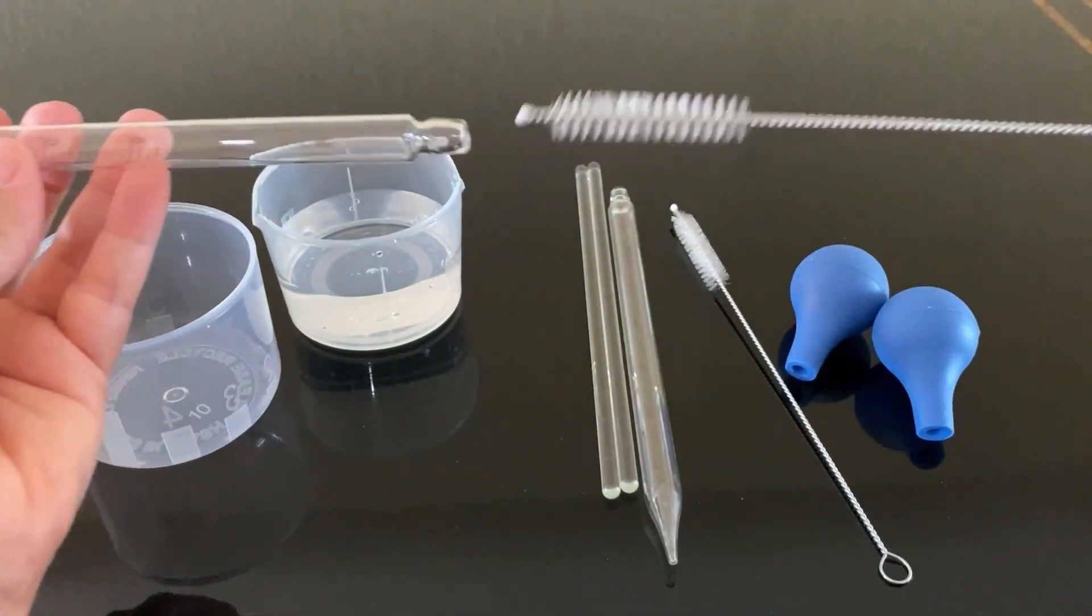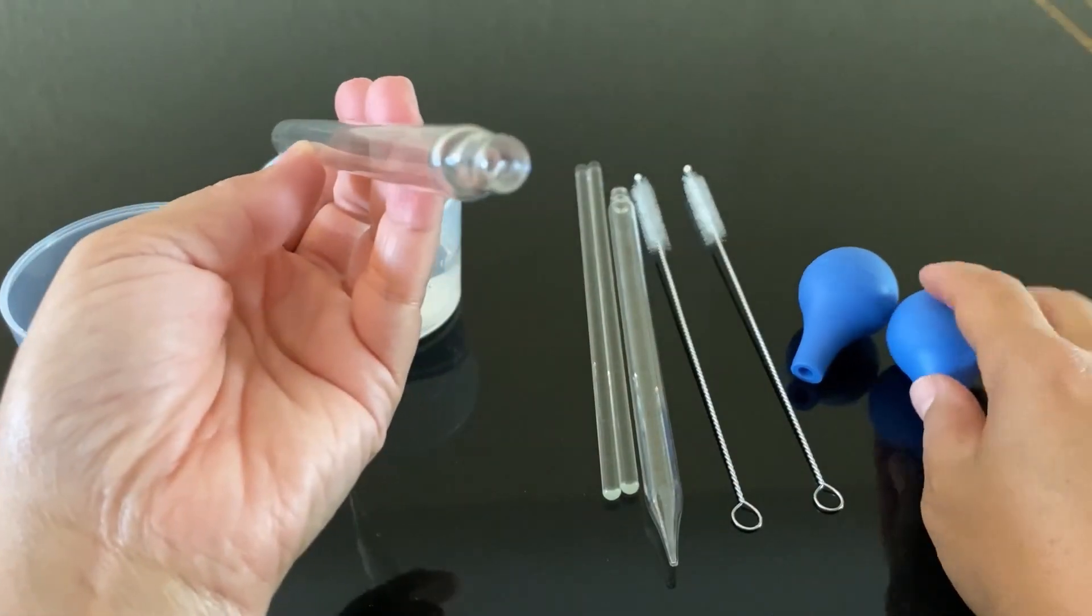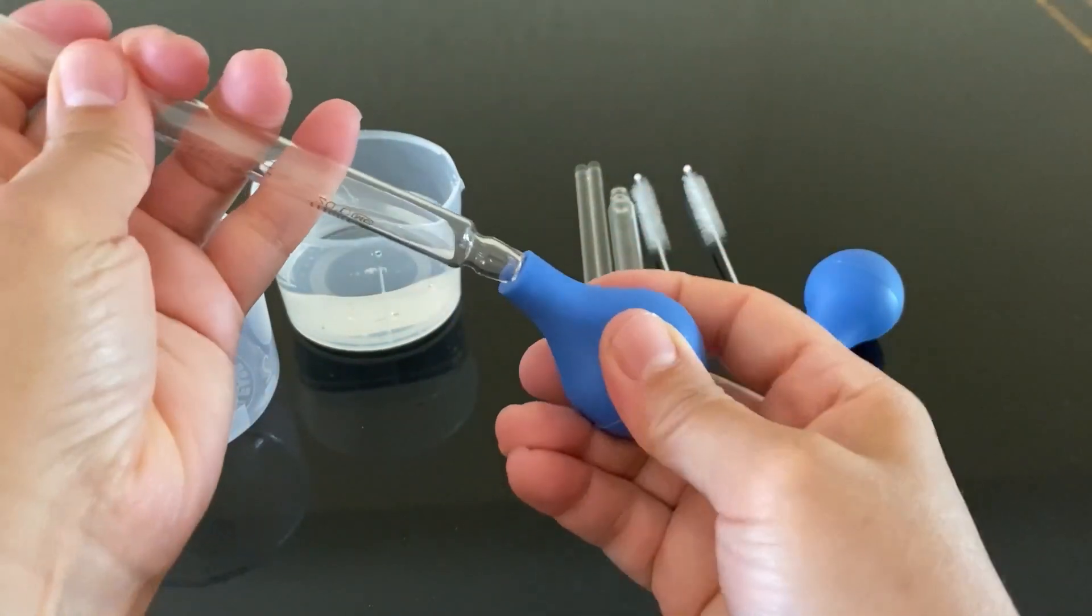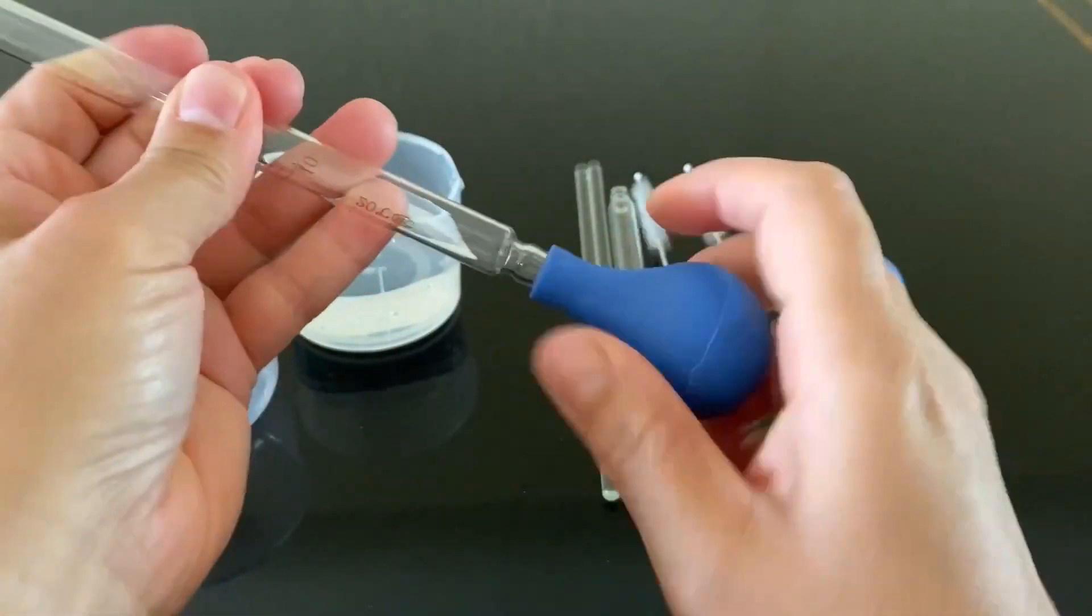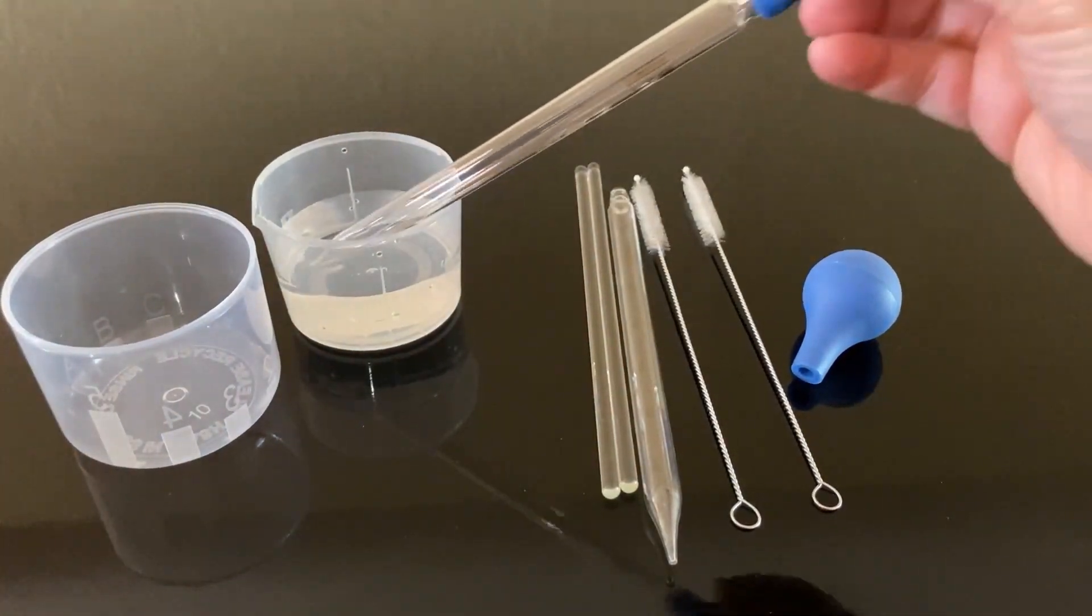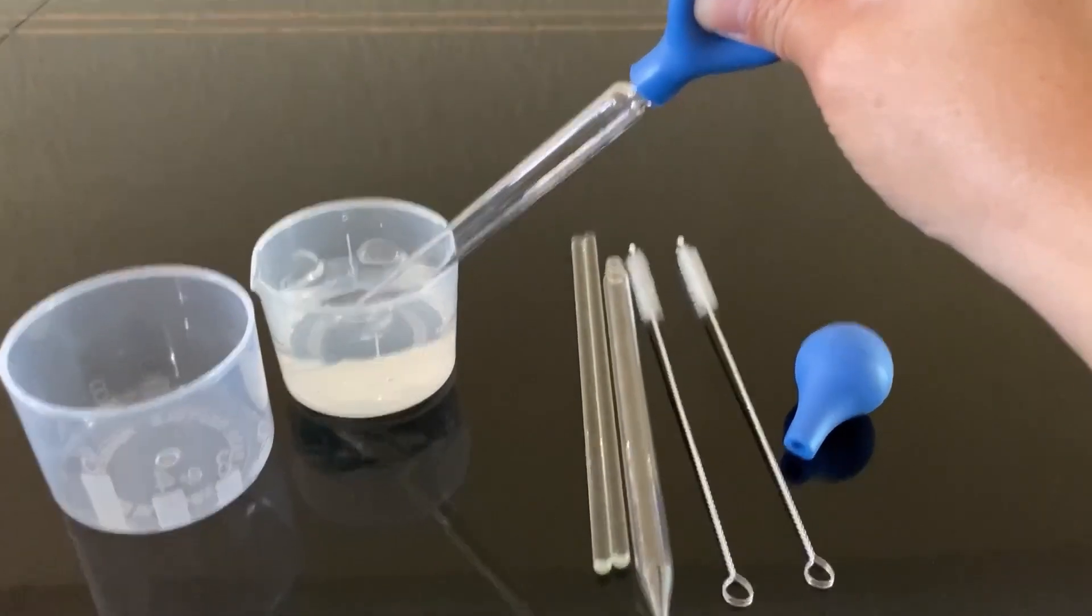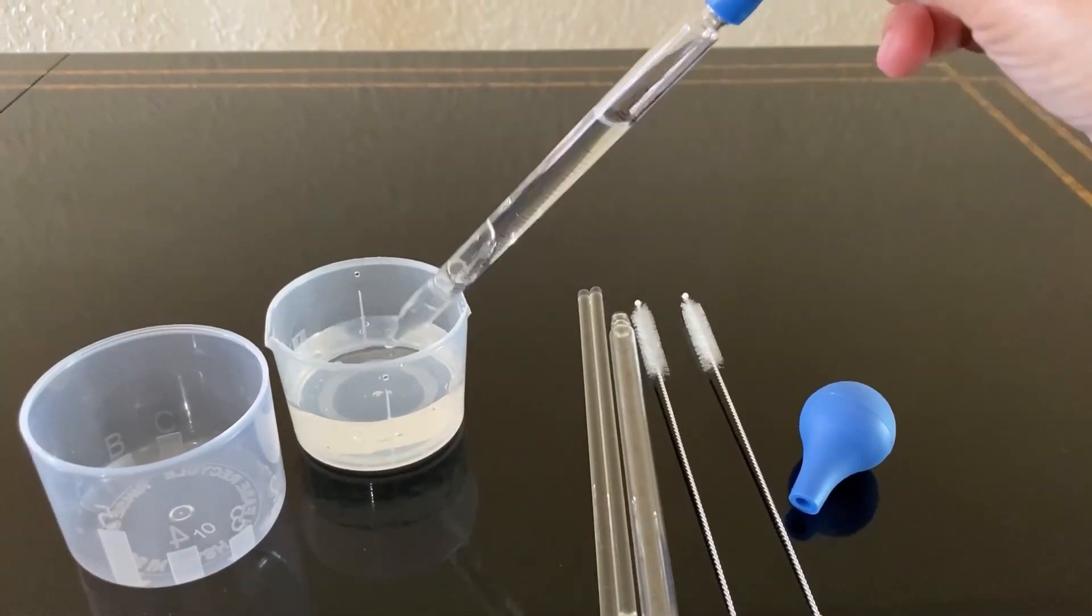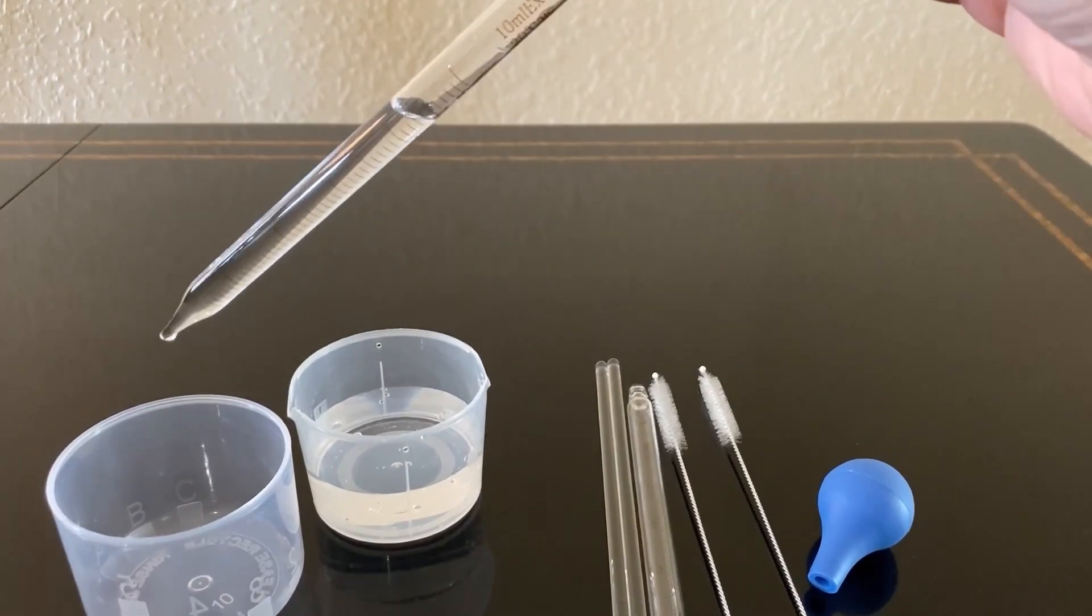Using these glass pipette dropper sets is really easy. Simply take your rubber bulb here and push it at the back end of your glass pipette, nice and secure. Then you're going to squeeze the blue rubber bulb to draw essential oil. The graduations on the dropper will help you measure the desired amount. Then you simply release the bulb slightly to control the flow of essential oil.